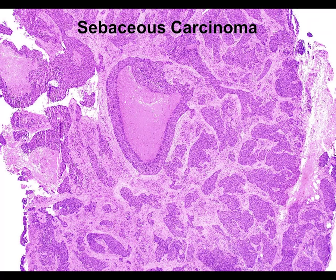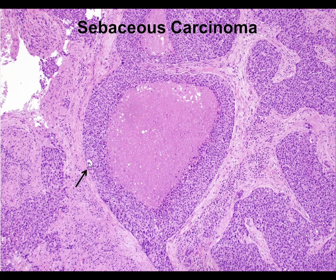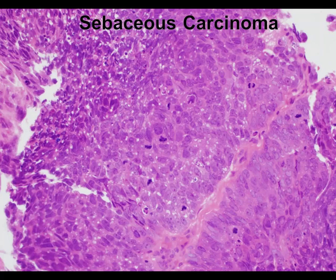Poorly differentiated sebaceous carcinomas can be confused with basal cell carcinoma, squamous cell carcinoma, or metastasis. Around the head and neck or periocular area, if you have a poorly differentiated tumor with some basaloid differentiation but lacking the peripheral palisading you see in basals, and you see comedic necrosis, you should always be suspicious of sebaceous carcinoma. On high power you can sometimes see sebocytes within the tumor. In other cases you have a poorly differentiated tumor with marked pleomorphism, many mitoses, and small clear vacuoles in the cytoplasm — when you see a basaloid tumor with these white holes in the cytoplasm, always think sebaceous carcinoma.